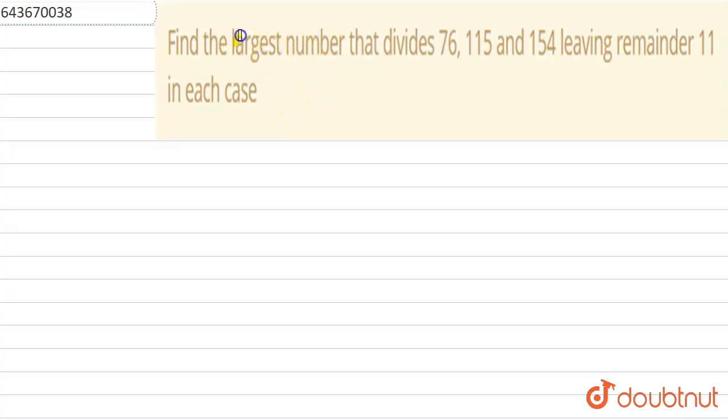So this is the question: Find the largest number that divides 76, 115, and 154 leaving remainder 11 in each case. In each case, we have to leave the remainder as 11, and we have to find the largest number that divides these three.